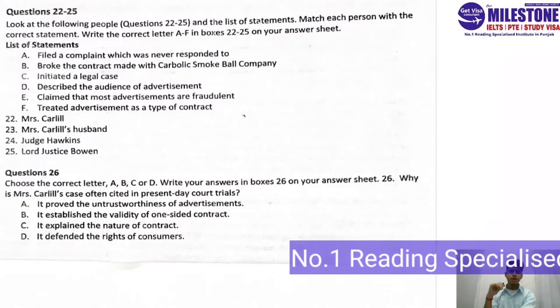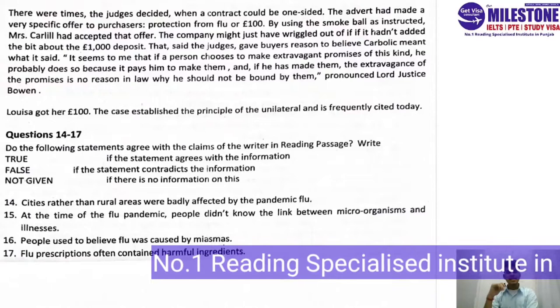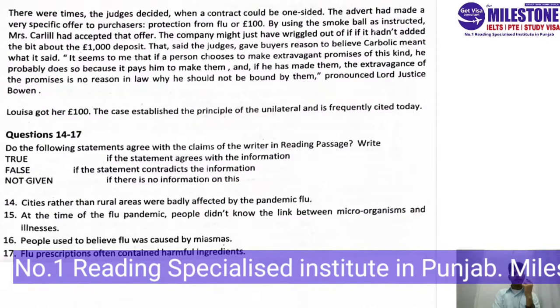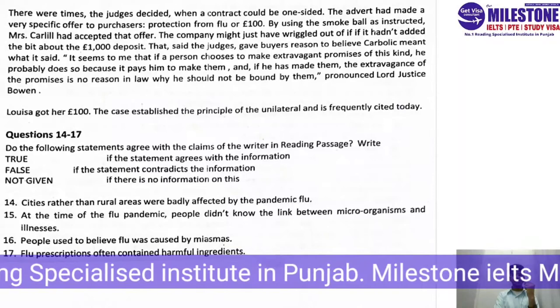The first True/False/Not Given question is number 14. Question 15 states that urban areas — cities — rather than rural areas were badly affected by the pandemic flu. The cities were affected by the pandemic flu as compared to the rural areas.